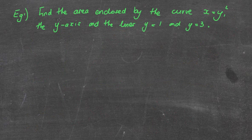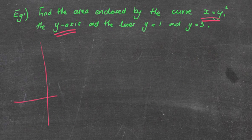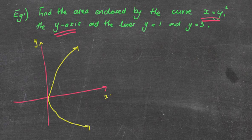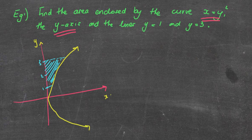Let's look at the question: find the area enclosed by the curve x = y², the y-axis, and the lines y = 1 and y = 3. They've already given it in the form x equals, which is nice. You need to know what x = y² looks like — it's a parabola but a sideways one. Drawing these graphs is a little more challenging, but it's really beneficial to sketch it.